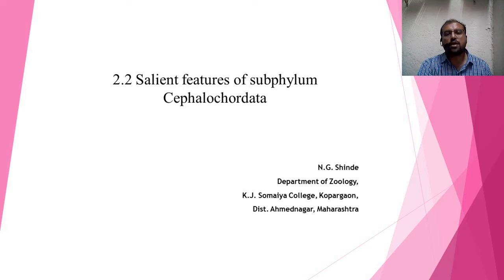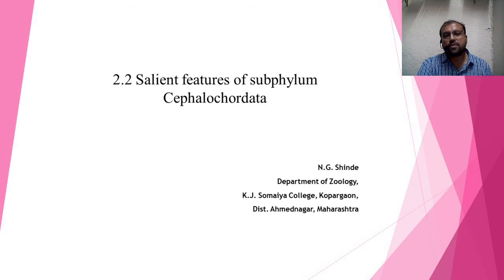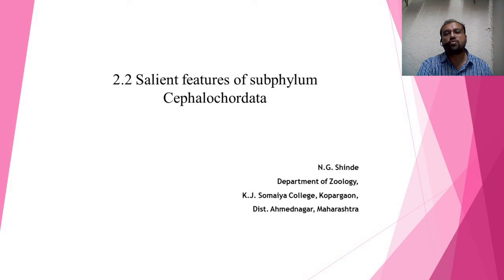As you know, Hemichordata and Urochordata are primitive chordates. In Hemichordates, the notochord said to be present in the proboscis is nothing but the buccal diverticulum, and it is somewhat doubtful. In Urochordata, the notochord is present in the larval stage but disappears as the larva converts to adult. But in Cephalochordata, these are the only individuals among Protochordata in which the persistent notochord remains throughout life.